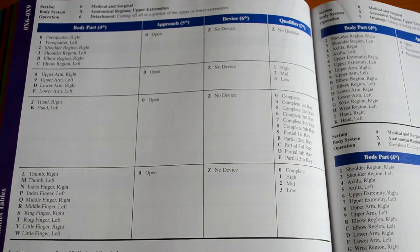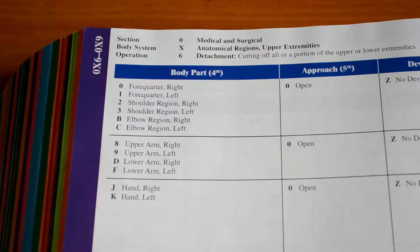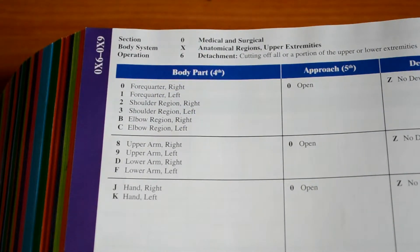So once you have located the detachment table, we can already start building our code. So looking at the top of the table, we already know our section, body system, and operation characters.